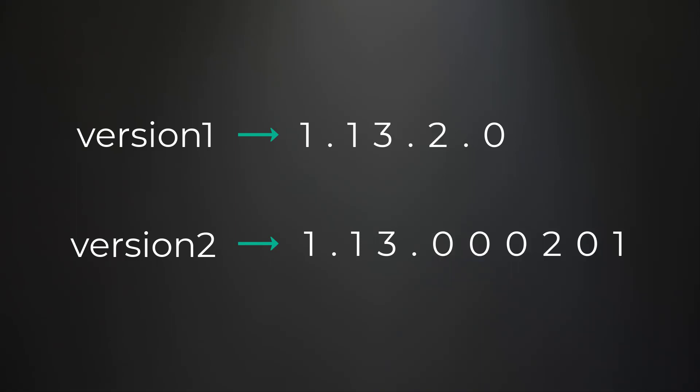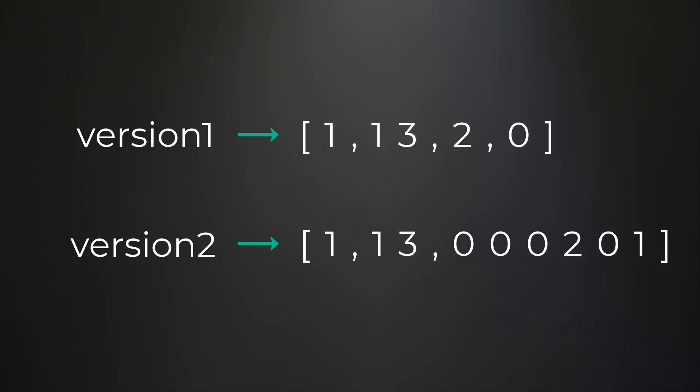What does this look like as an algorithm? We're going to use a two-pointer approach. First, we split our strings based on the periods, so version one and version two each become arrays of revision strings. Then we have one pointer 'i' starting at index zero of the version one array and another pointer 'j' starting at index zero of the version two array.